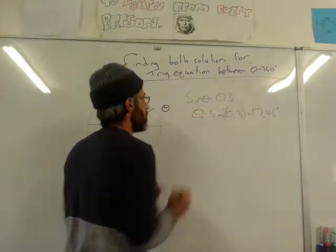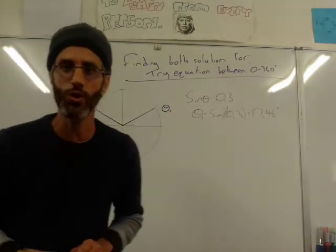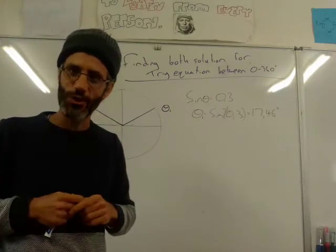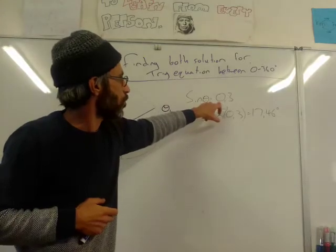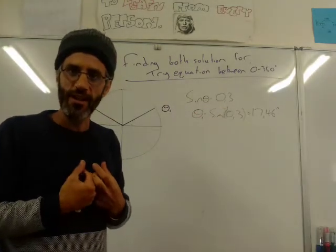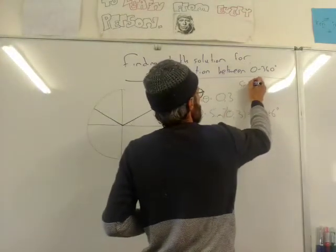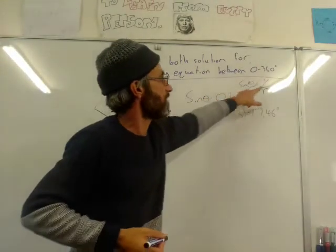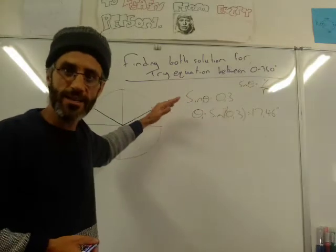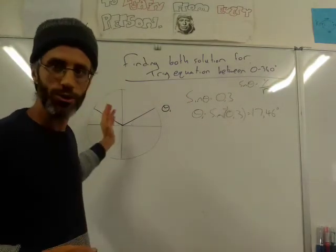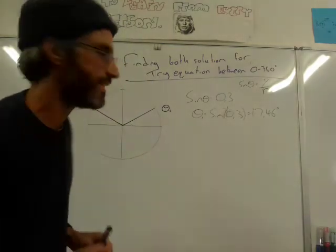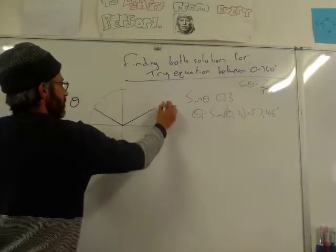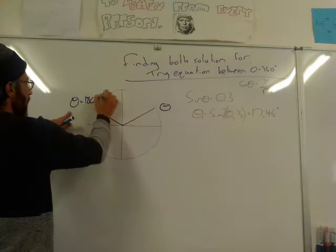So your first angle — we call it theta 1 — your first solution is 17 degrees, that's around here. We already said there must be a second solution. Because 0.3, the ratio, is positive. Sine theta is your y-coordinate divided by the radius. If sine theta is positive, that means y is positive. That means there's going to be another solution in the second quadrant. And we already figured out how to find that solution — the second solution is going to be 180 minus theta.